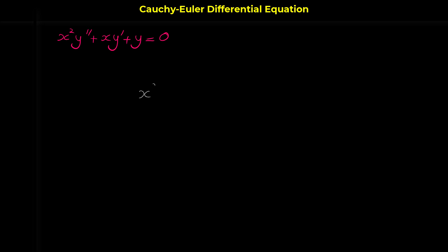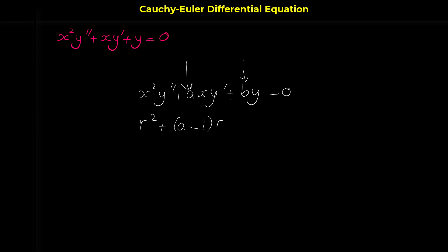In general, when we have a Cauchy-Euler equation, the general form of a second order homogeneous Cauchy-Euler differential equation is x squared y double prime plus a x y prime plus b y equals zero, where a and b are constants. The characteristic equation is r squared plus (a minus 1) r plus b equals zero.